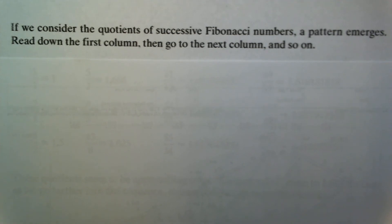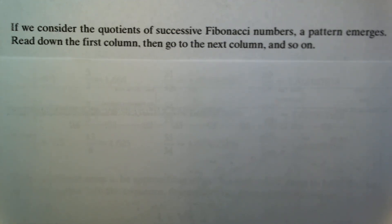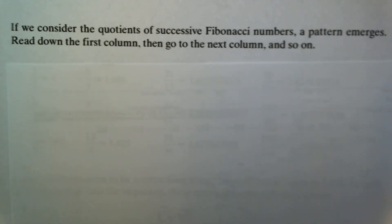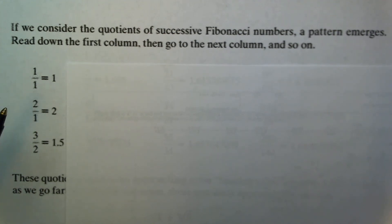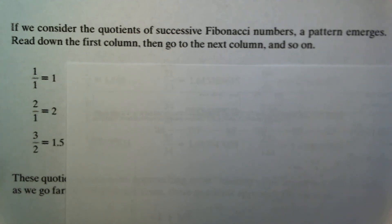Here's the interesting connection between Fibonacci numbers and the golden ratio. If we look at the quotients of successive Fibonacci numbers, a pattern emerges. Reading down the first column then to the next column, here are the ratios of consecutive Fibonacci numbers — the first to the second, the second to the third, and so on.